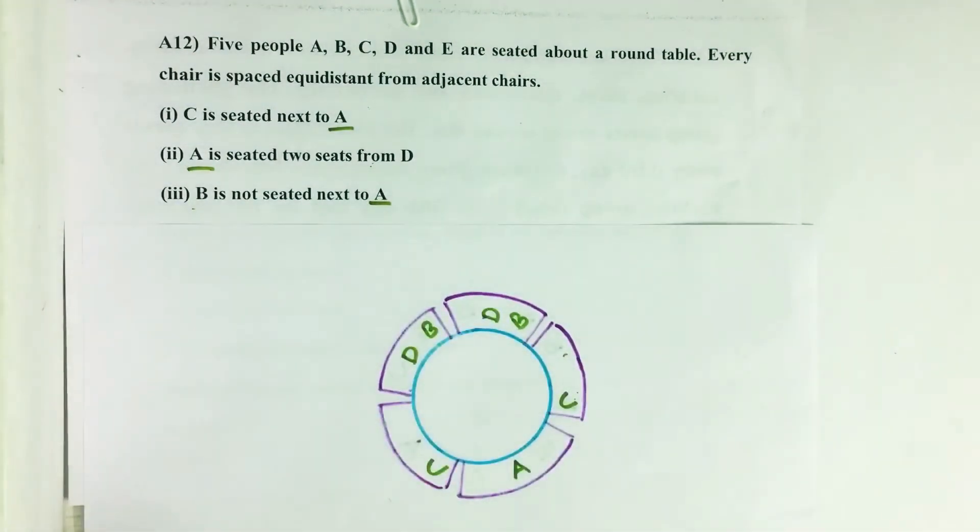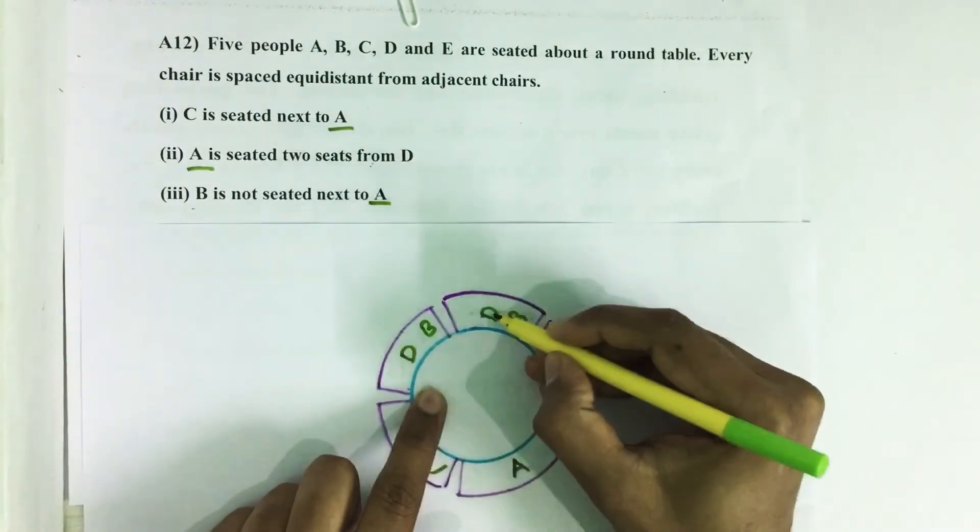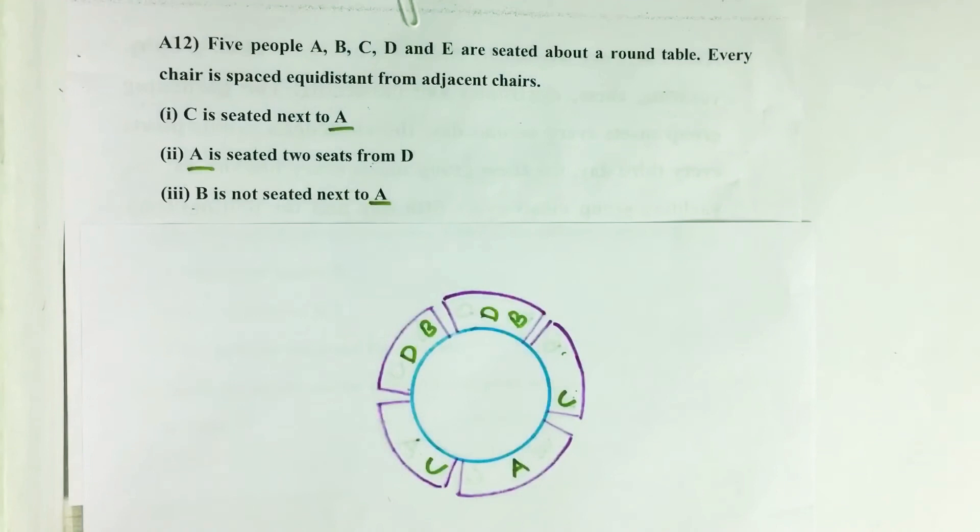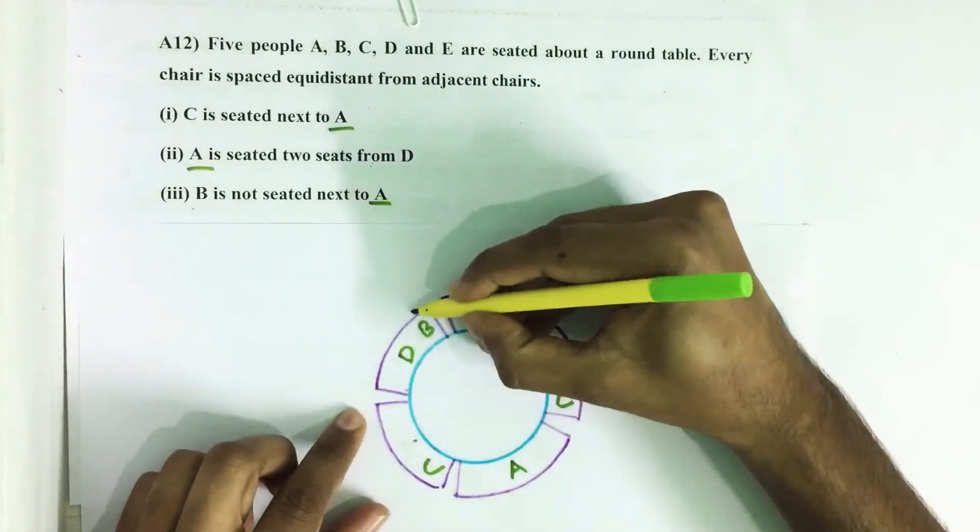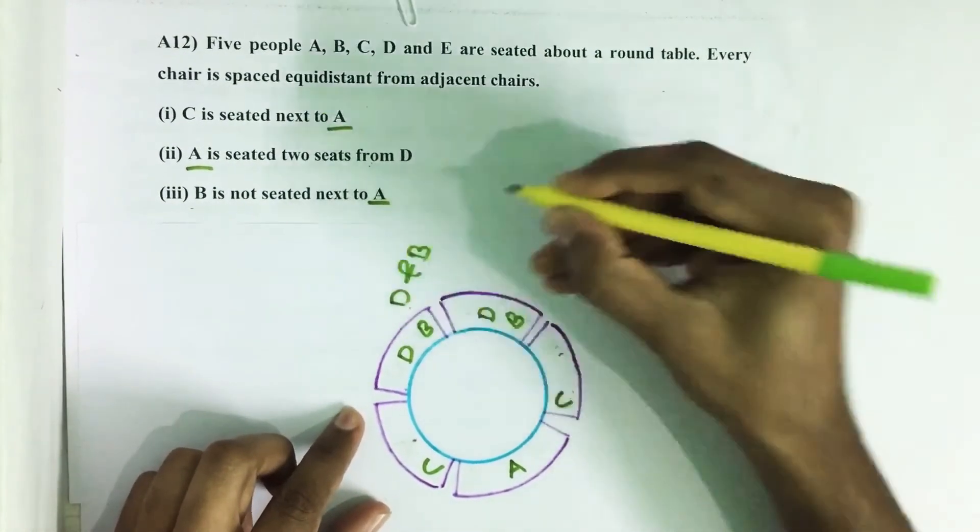That means D or B is seated either in this seat or in this seat. These two seats are fixed for D and B.